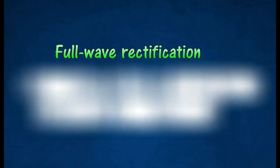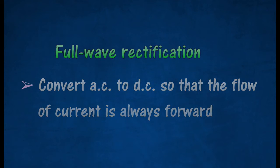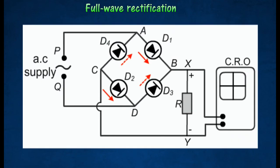In full-wave rectification, diodes are used to convert alternating current to direct current so that the flow of current is always forward. The diagram shows four diodes connected to form a bridge rectifier.